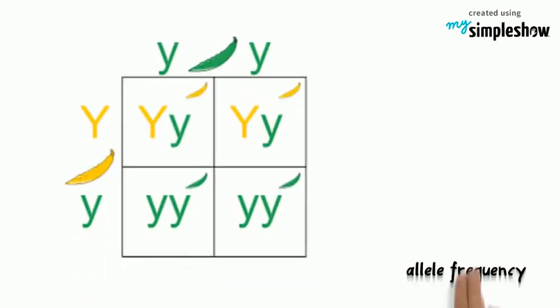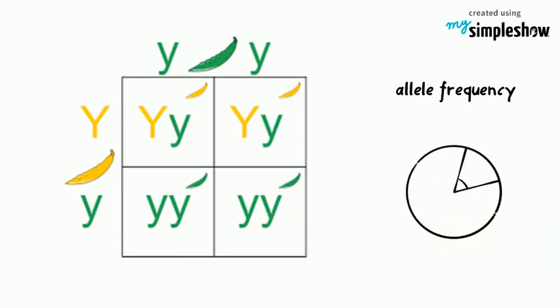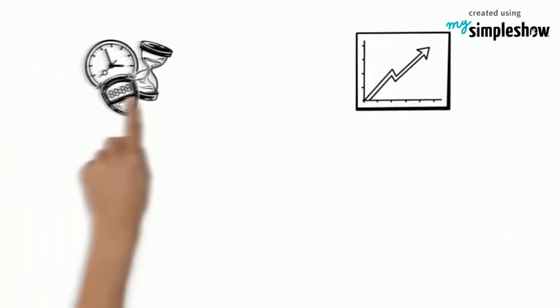In the last unit we discussed the genotypic and phenotypic ratios of groups of organisms, but we didn't talk about the allele frequency of the population. The allele frequency is the ratio of dominant or recessive alleles in relation to all of the alleles for that trait in a population. When the allele frequencies change over time, the phenotypes of populations change and evolution happens.